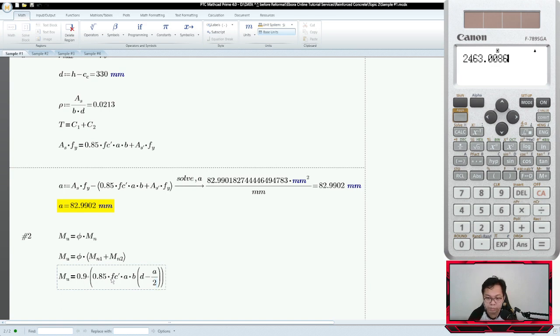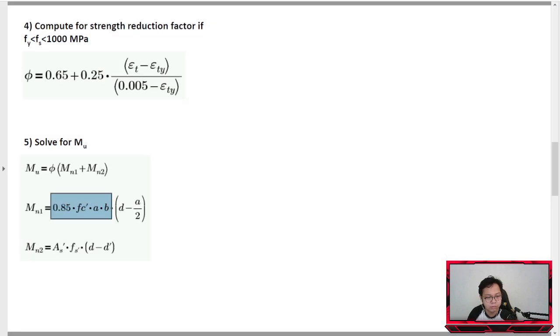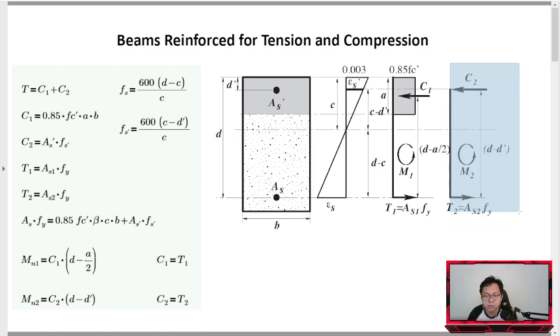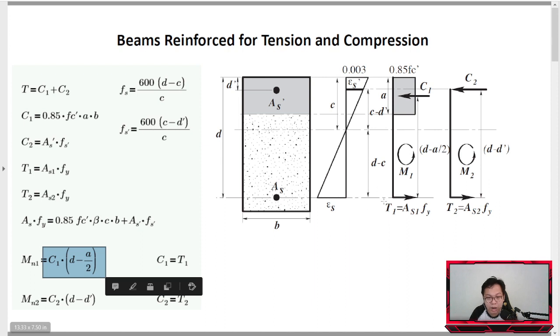Then plus MN2. MN2 is the nominal moment caused by the rebar, the second step. The moment caused here - you can sum moments about C2. You can either have C2 rotate here, or AS2 rotate here. However, take note, if you use AS2 FY times D minus D prime, you'll have a problem because we don't have AS2. We don't have AS2 or AS1, we have total AS.